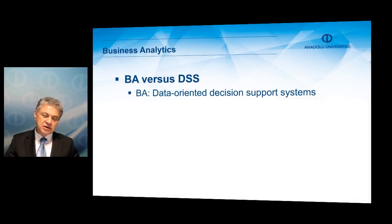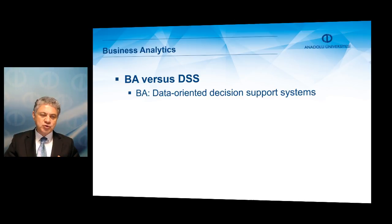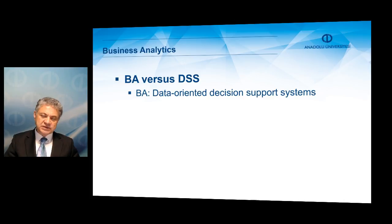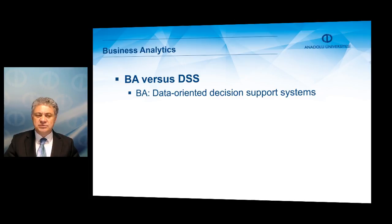Closely related terms are business analytics and decision support systems. Decision support systems are basically any kind of tools that help a decision maker gain insights on a problem or opportunity. Business analytics, the way it is now, seems to be data-oriented. Decision support systems can also be model-oriented, communication-oriented, solver-oriented, or text-oriented — there are many kinds of decision support systems.